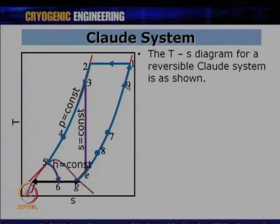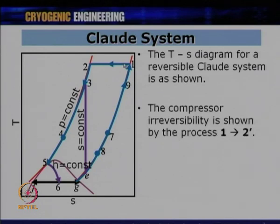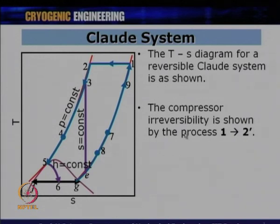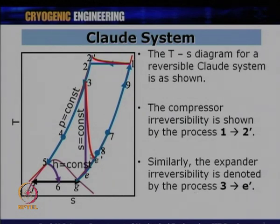On the T-S diagram of the Claude cycle: the ideal isothermal compression from 1 to 2 becomes a 1-to-2-dash process in an actual system, meaning more work is done. Similarly, the isentropic expansion from 3 to E becomes 3 to E-dash due to expander inefficiencies. Compressor irreversibility arises from frictional losses (mechanical efficiency η_mech) and non-isothermal compression (η_isothermal), with overall efficiency η_overall = η_mech × η_isothermal. Similarly, expander inefficiency comes from frictional losses and non-isentropic behavior, giving η_overall_expander = η_mech_expander × η_adiabatic.